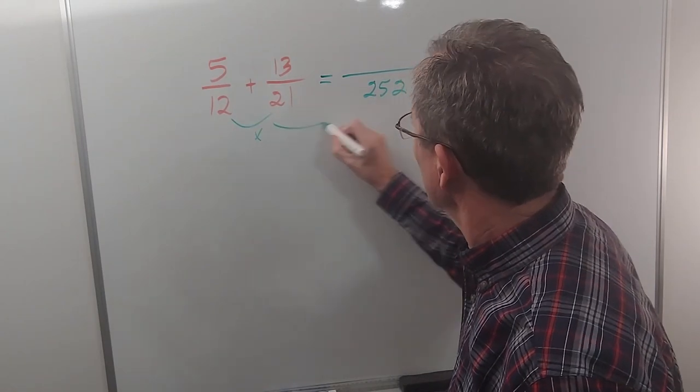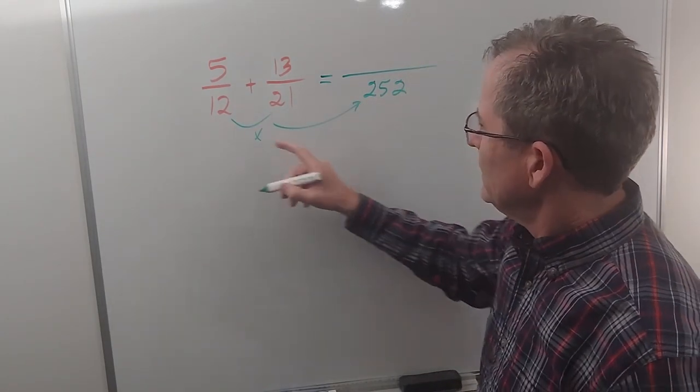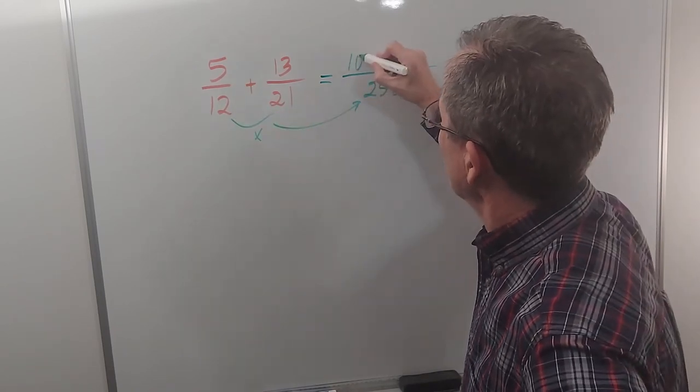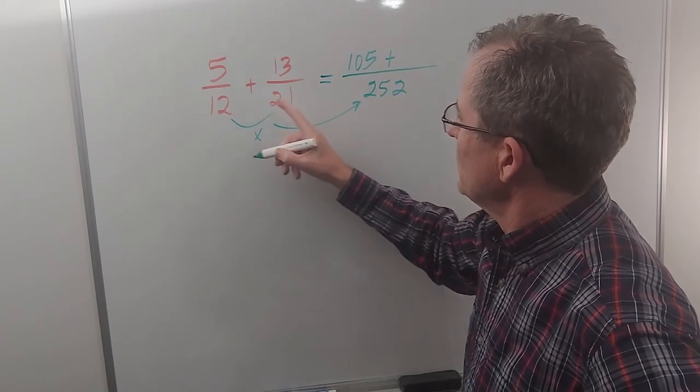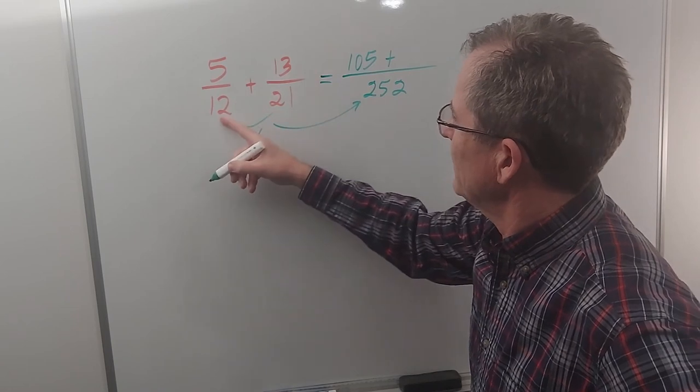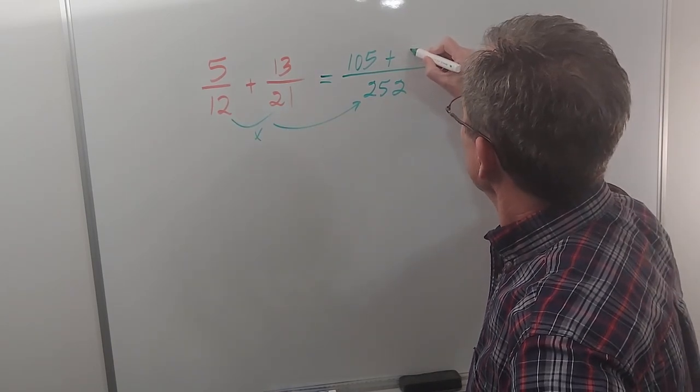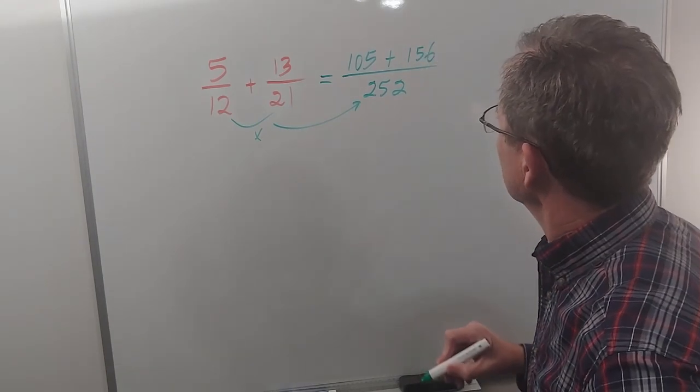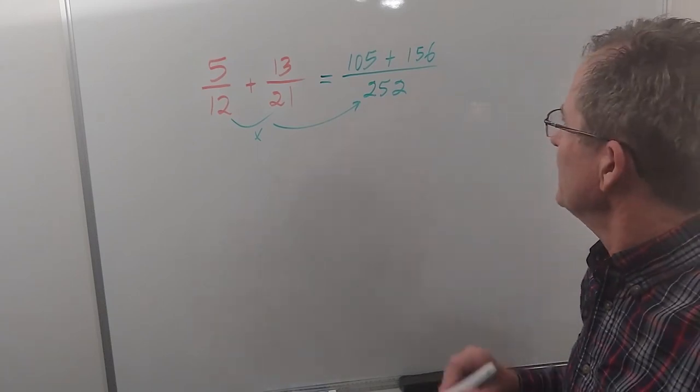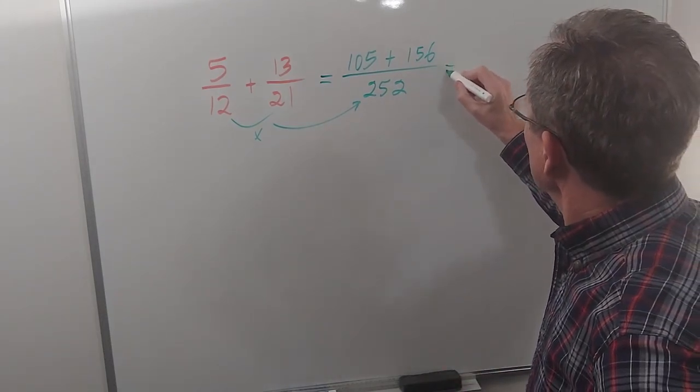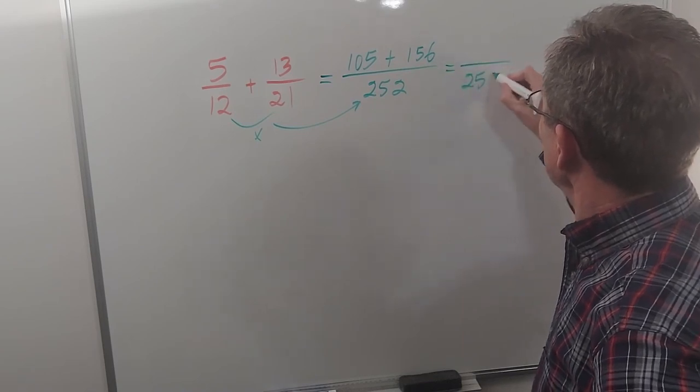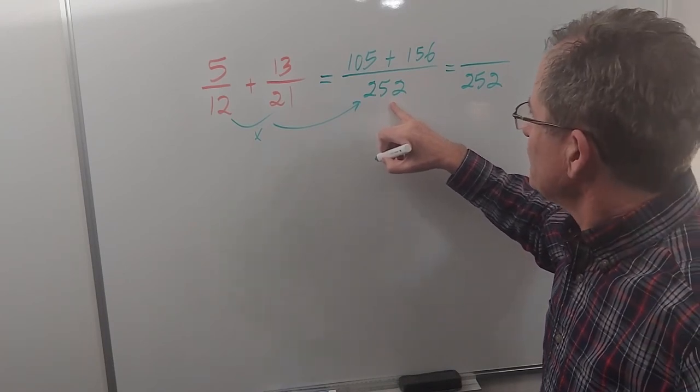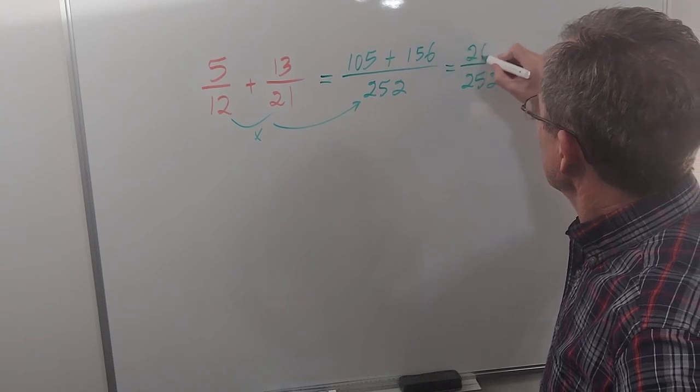Just multiply those to get that number, and then since I multiplied 12 by 21 to get 252, I have to multiply 5 times 21 which is 105. And since I multiplied 21 by 12 to get 252, I have to multiply 13 by 12, which is 156. Then you can just add the numerators because once you have a common denominator, you don't change it anymore. That gives me 261/252.